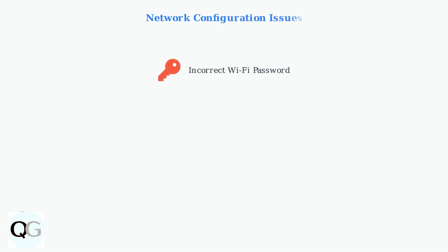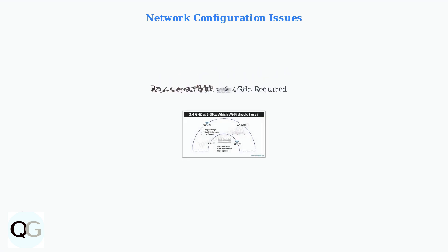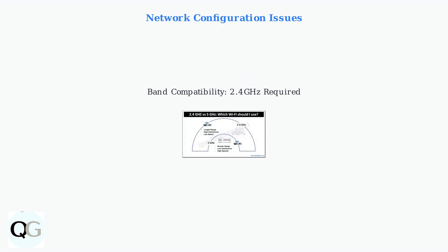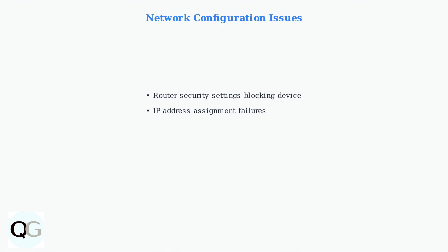The most frequent cause of connection failures involves network configuration problems. These include entering an incorrect Wi-Fi password, which accounts for about 35% of all connectivity issues. Another major issue is network band incompatibility — most Eufy cameras only support 2.4 GHz networks, not the faster 5 GHz bands that many modern routers broadcast by default. Router security settings can also block camera connections, and IP address assignment failures occur when the router cannot properly assign a network address to your camera.